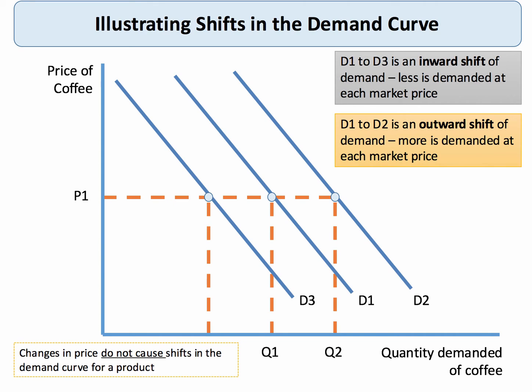The individual demand curve for products can also shift. D1 to D2 is an outward shift of demand — more is demanded at each price — and that will be caused by a change in one or more of the conditions of demand. D1 to D3 is an inward shift of demand, where there is less demanded at each price level, again caused by one or more of the conditions of demand changing.